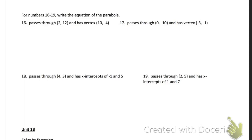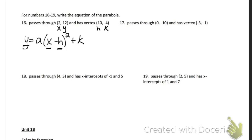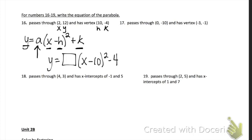Problem 16 gives us a point and a vertex. Label your point as X and Y, and your vertex as H and K. We're writing an equation of a parabola using vertex form because we were given the vertex. Plug in 12 for Y, 2 for X, 10 for H — make sure it says minus 10 — and negative 4 for K, then solve for A. After solving for A, your final answer will be y = A(x − 10) − 4. Problem 17 is the exact same — label your vertex as H, K and the other point as X and Y.